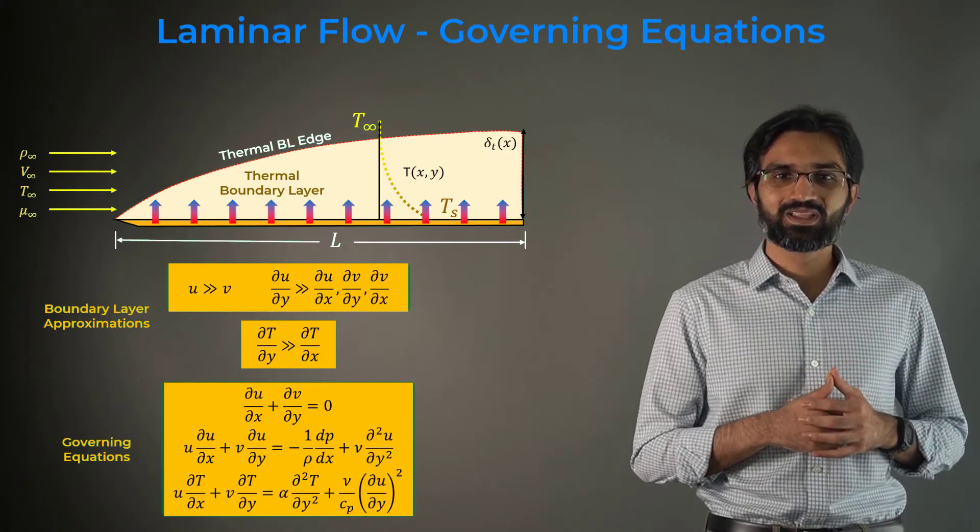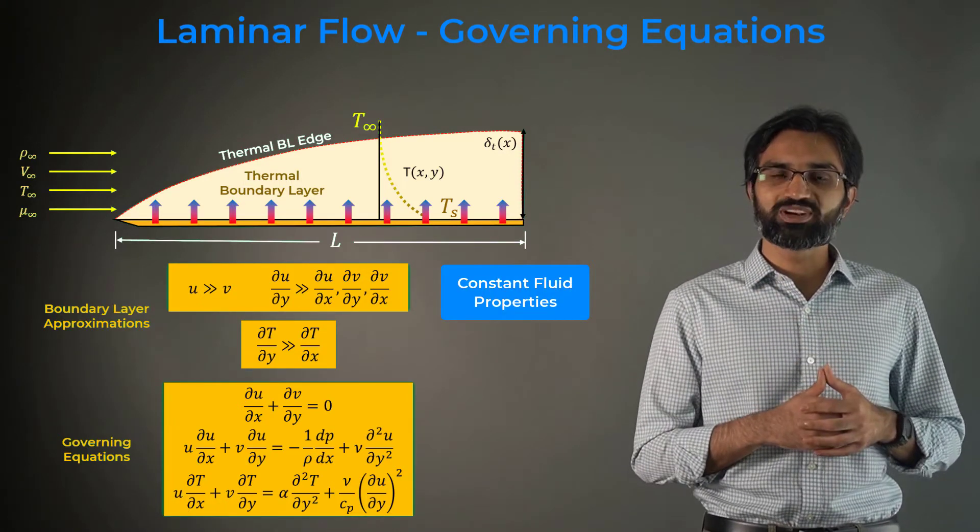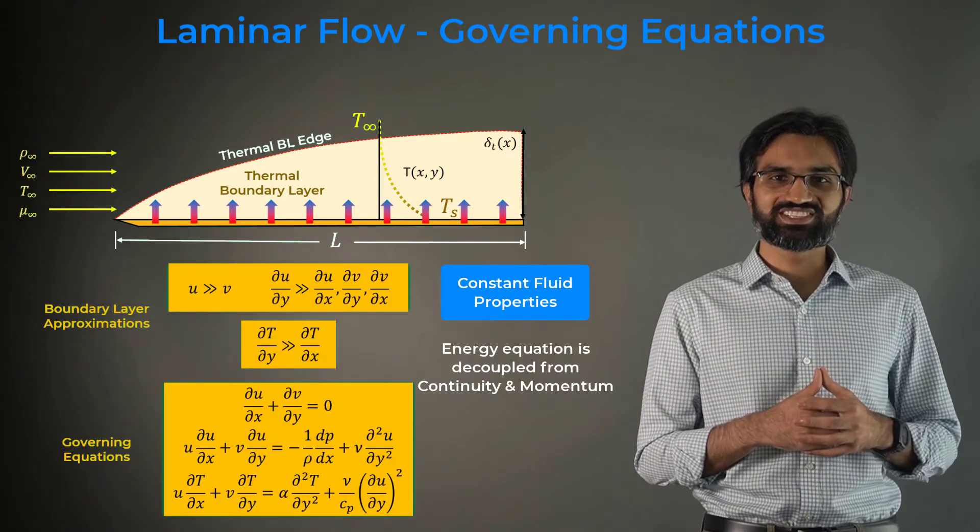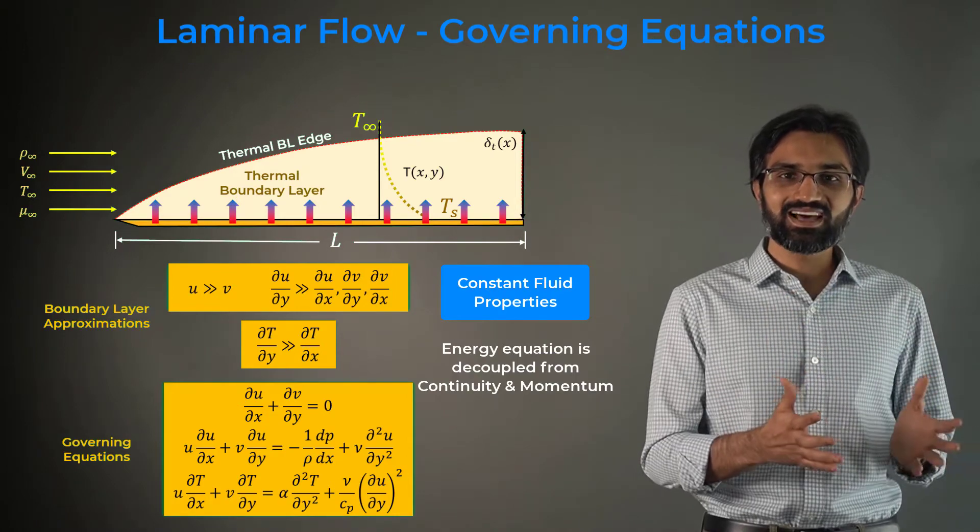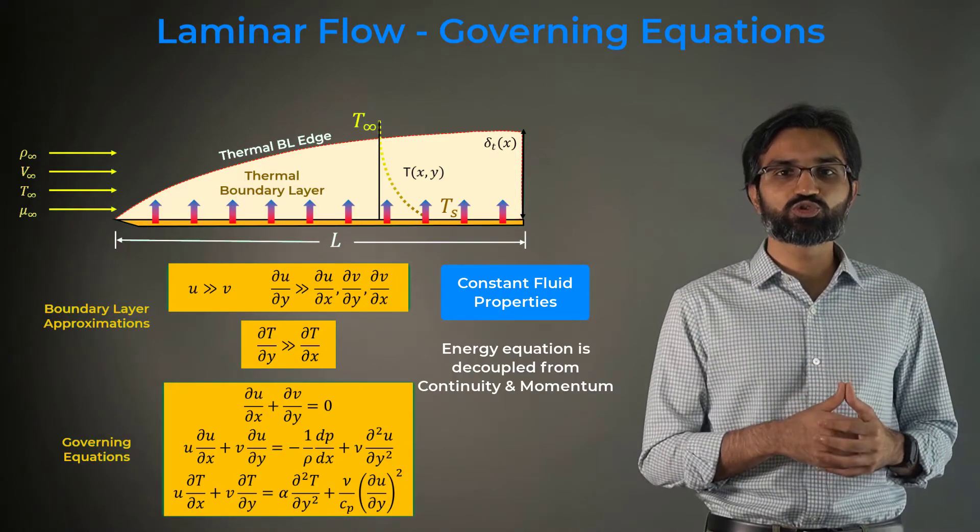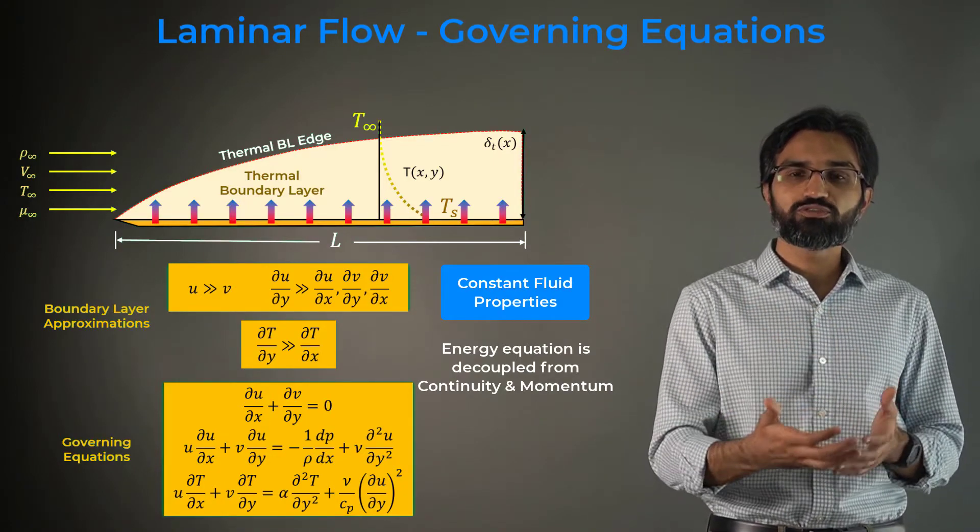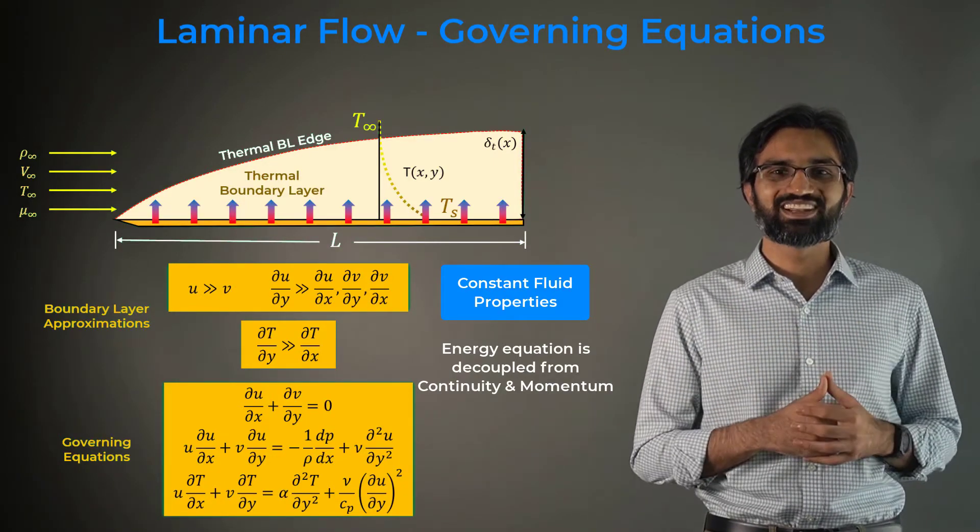Having said that, for fluids with constant flow properties, the energy equation is decoupled from the continuity and momentum equations. This allows us to obtain the velocity solution first and then we use the obtained solution to solve for the temperature field in the boundary layer.